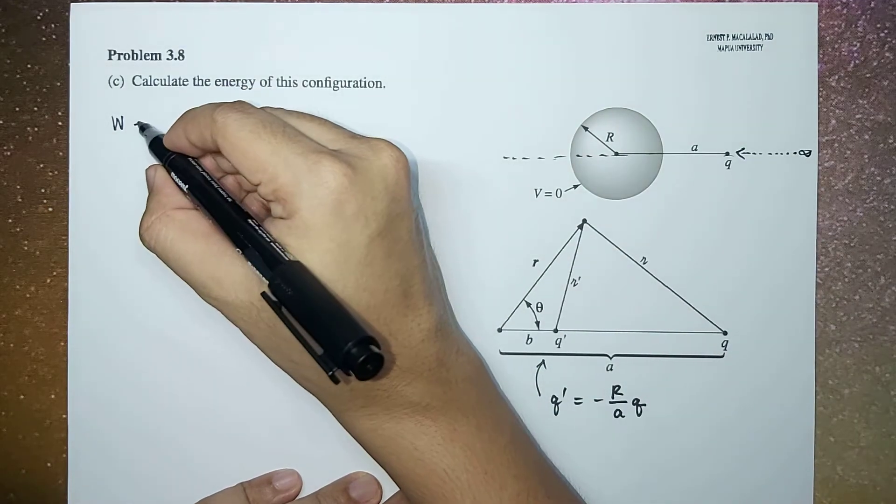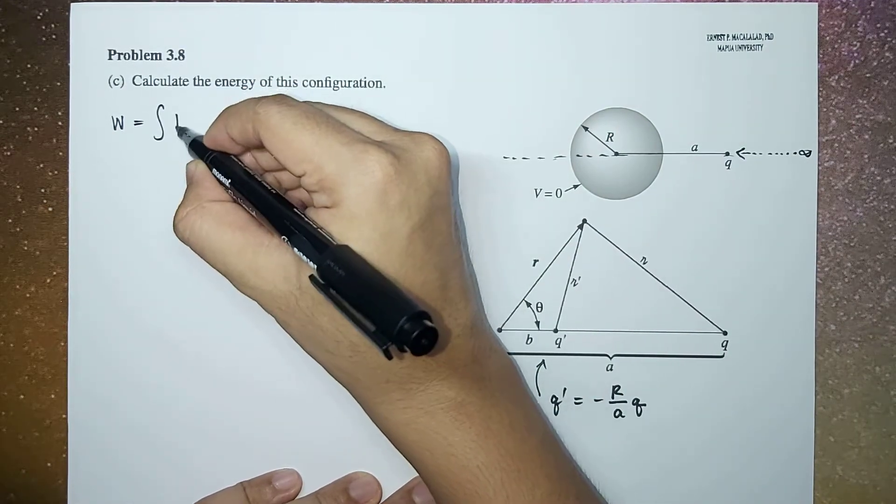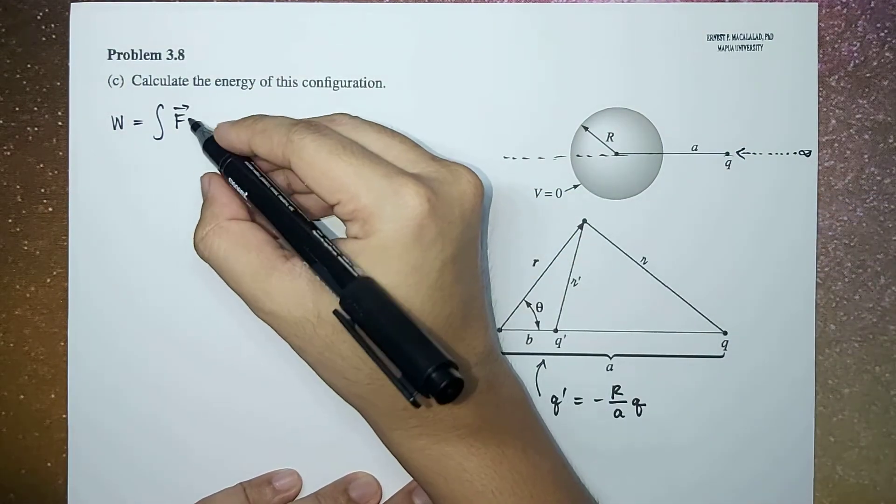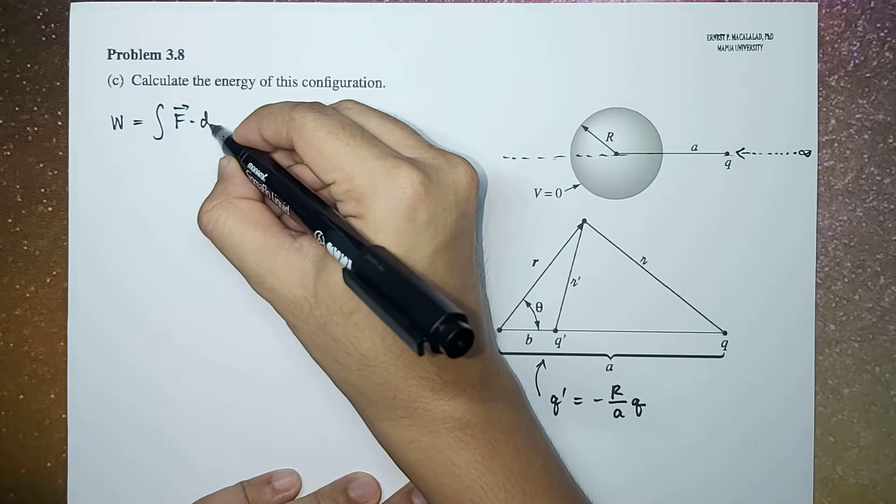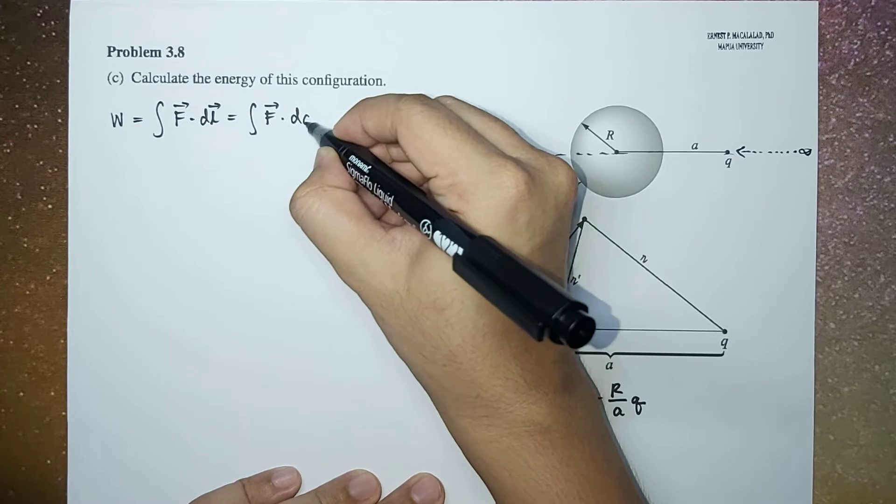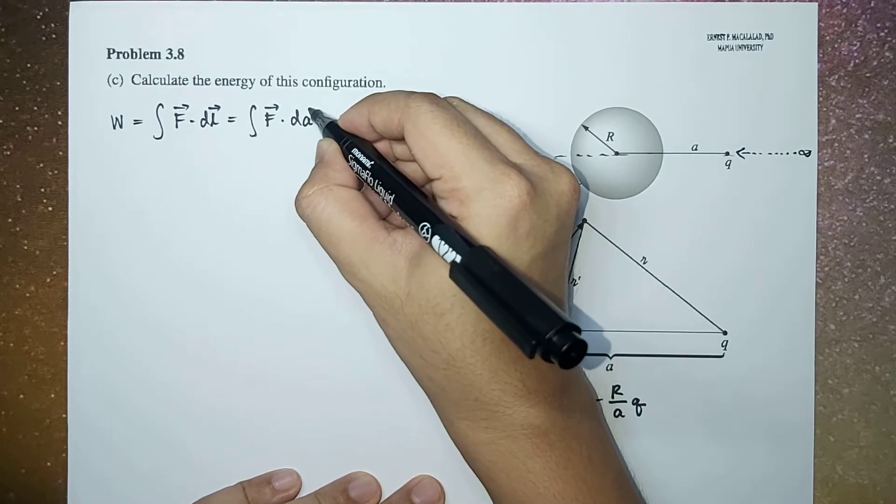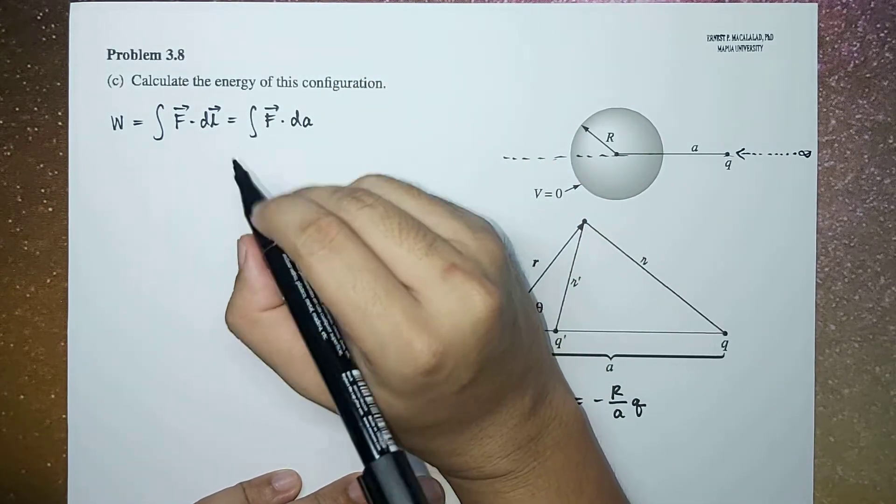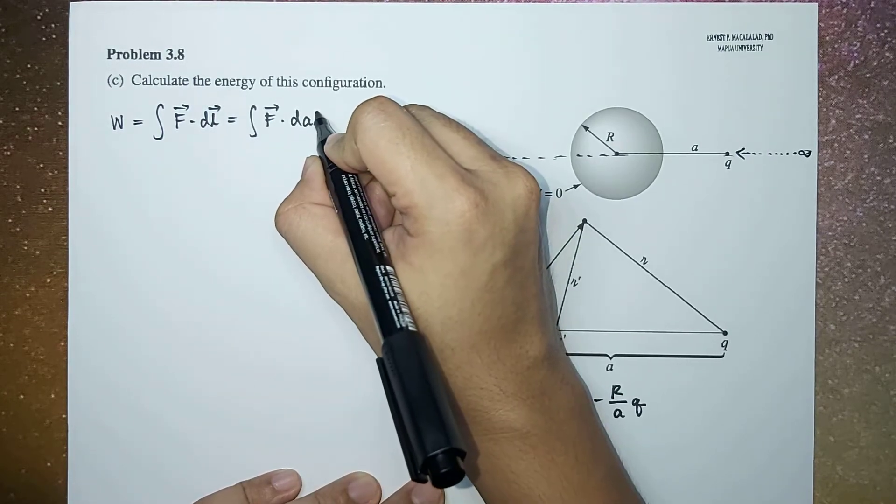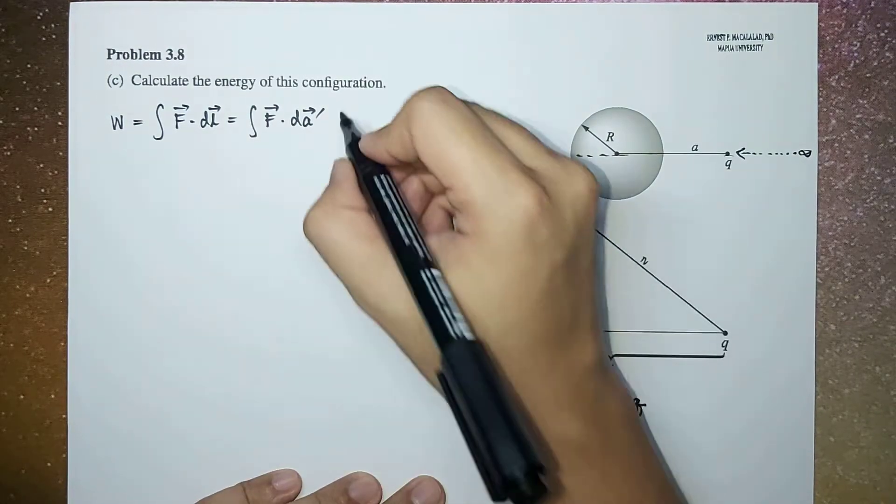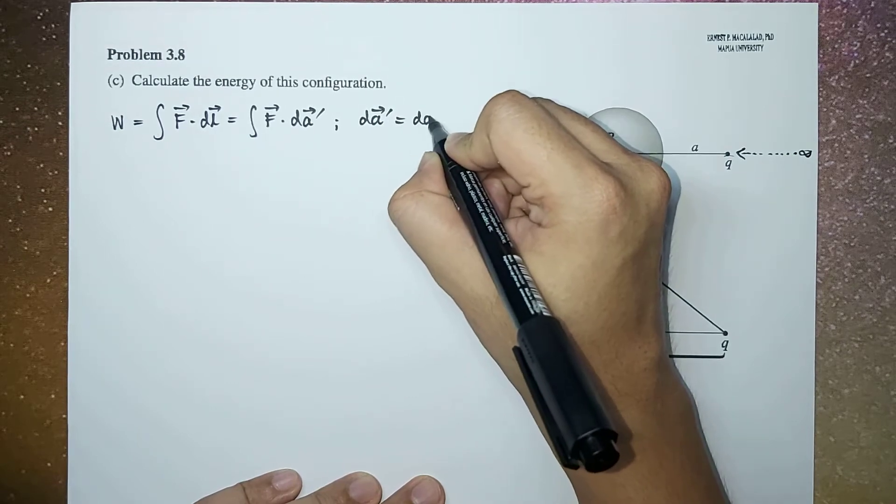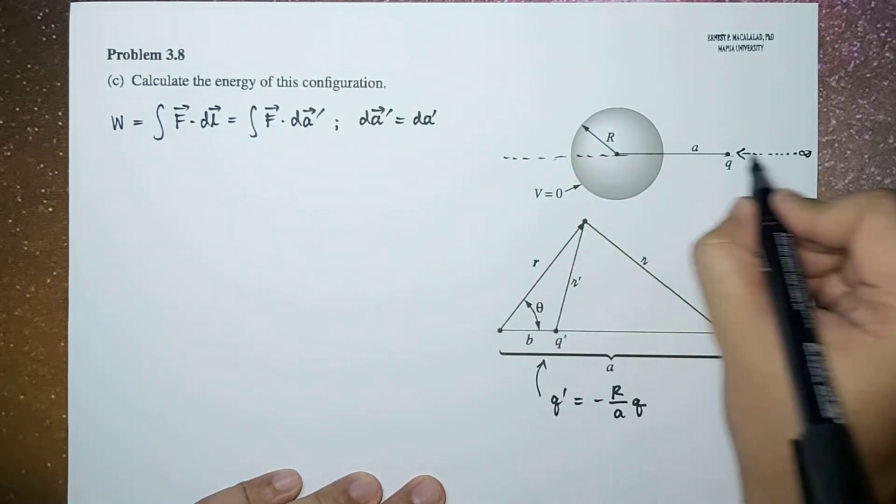So this becomes a line integral of the force that we want to exert times dl. In this case this will be da—just to be aware that this is not an area integral. Let's put in a prime here where da vector prime is equal to da prime which is along this direction, a prime hat.